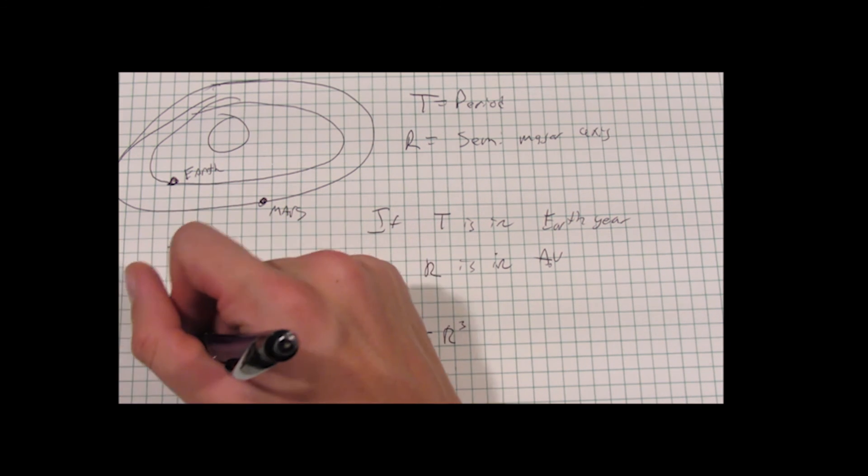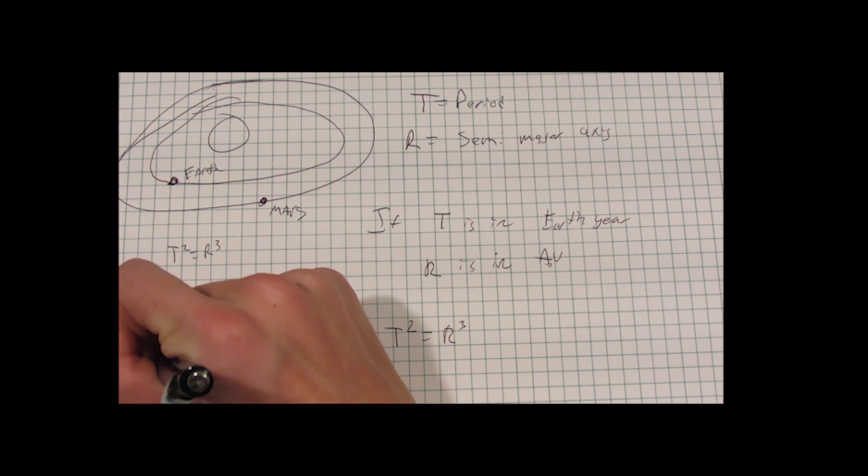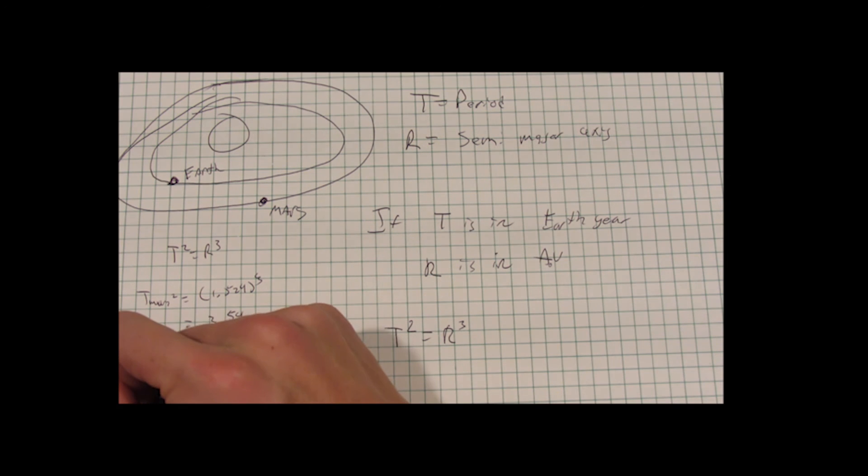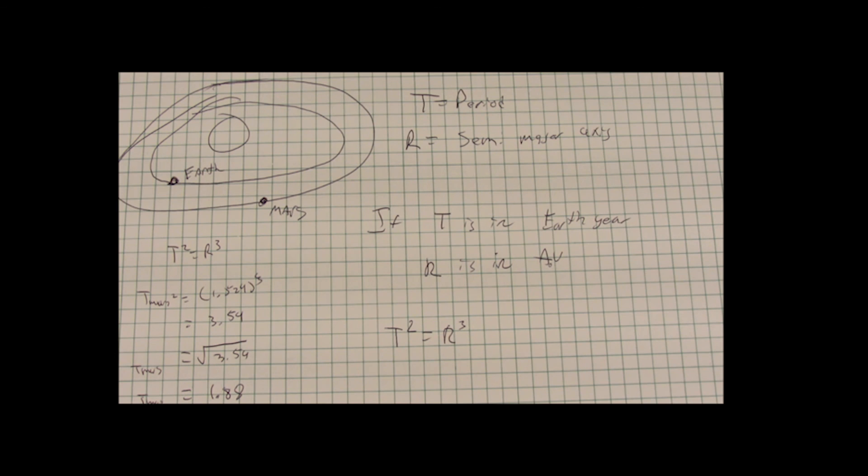Kepler's laws were at first not accepted by major figures in the scientific community at the time, such as Galileo and René Descartes, as they objected to the use of physics in astronomy. Another interesting thing about Kepler is that he provided a new and correct way of how vision occurs. He developed an explanation for this behavior of light.